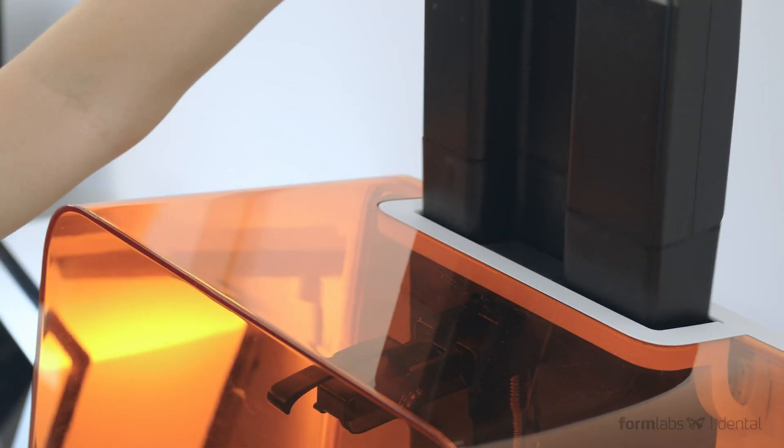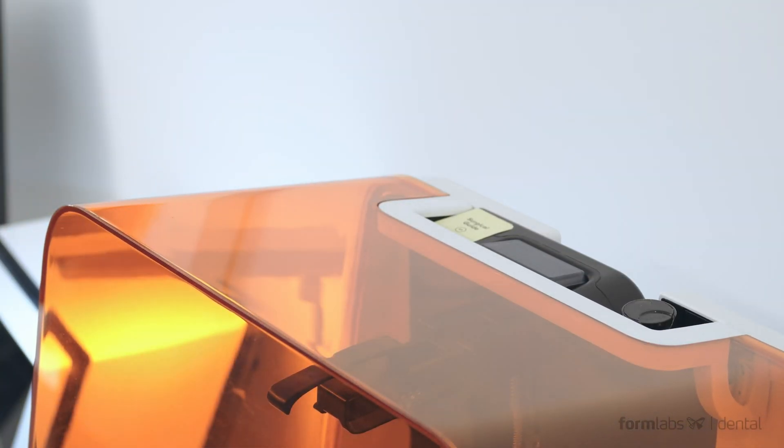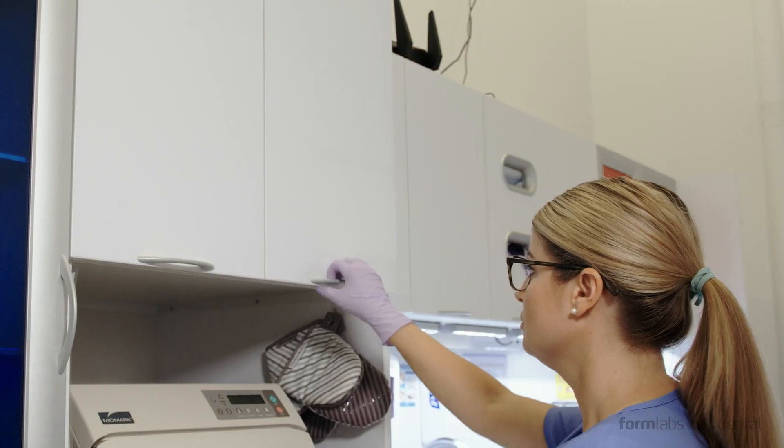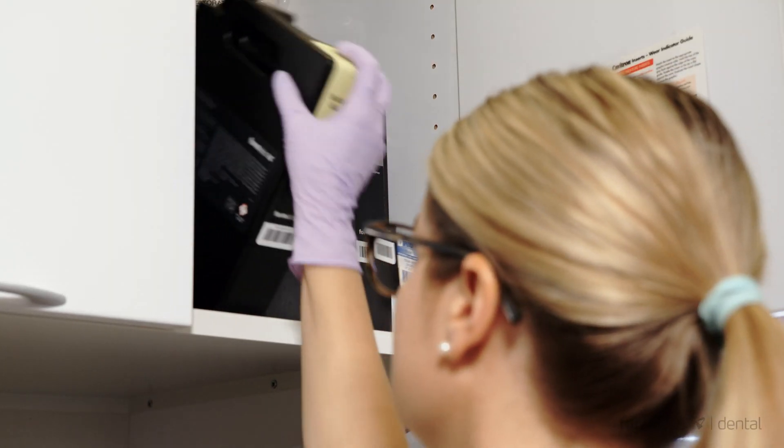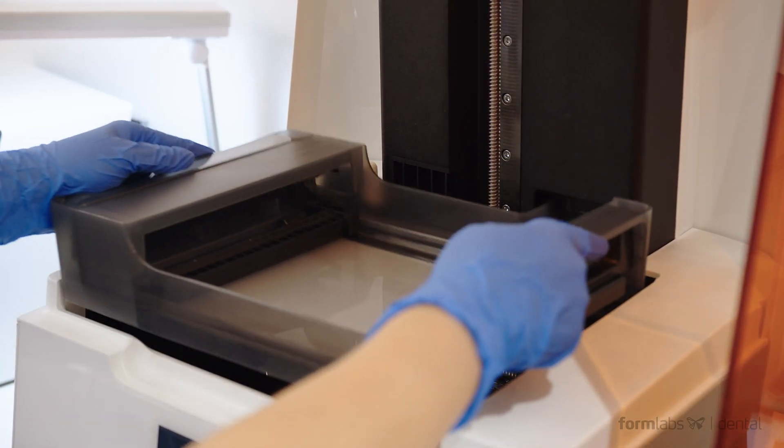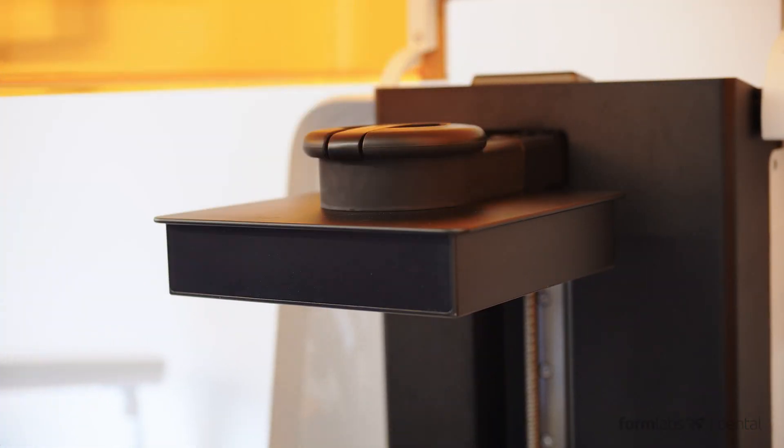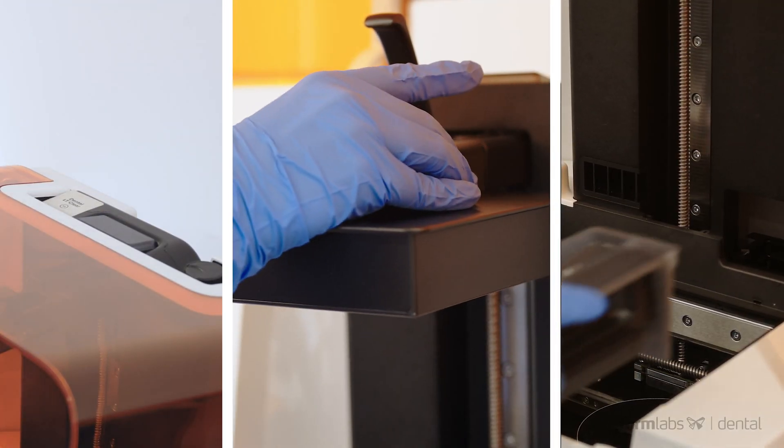The Form 3B's mess-free, easy-to-use resin cartridge system, compatible with existing Form 2 resin cartridges, and the easily replaceable resin tank and build plate make changing materials and getting the printer ready to print a simple three-step process.